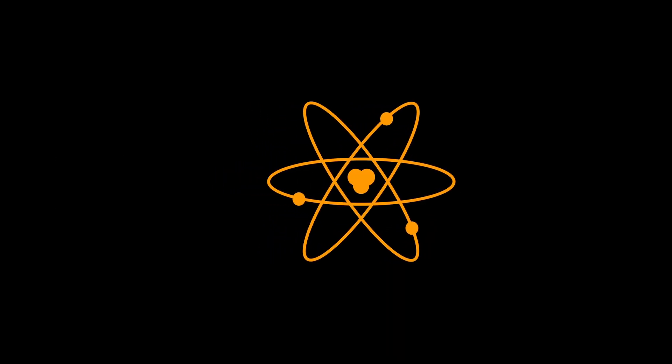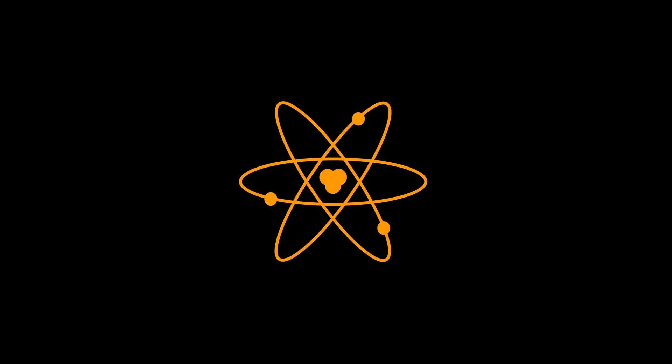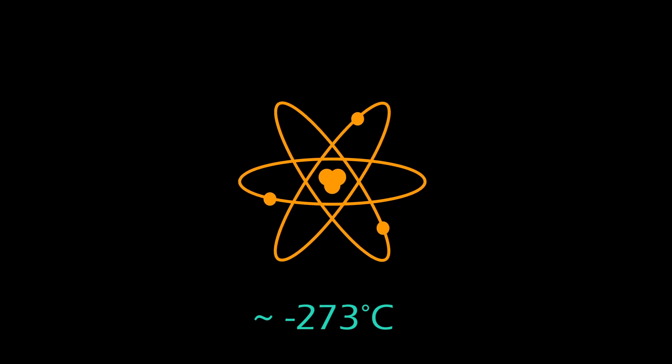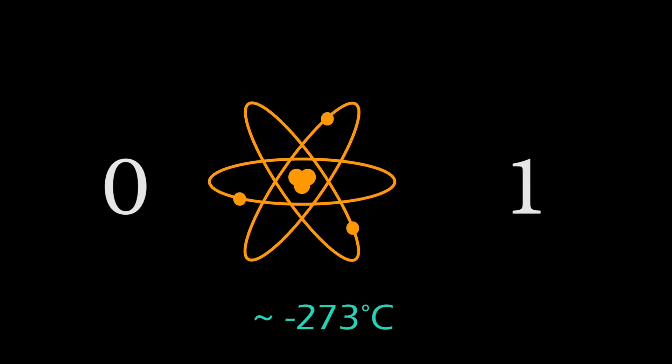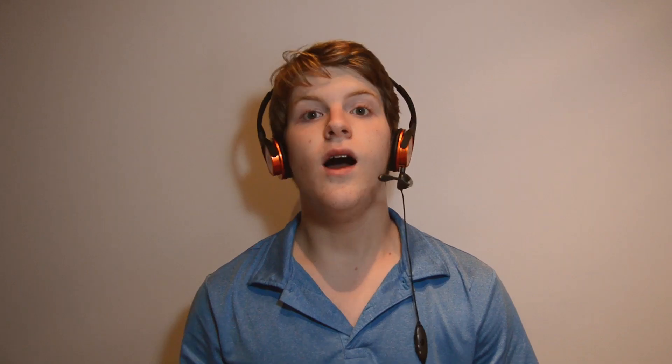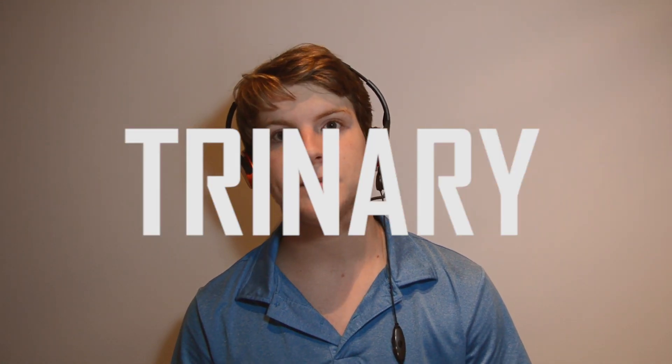Quantum computing uses single atoms as transistors. Quantum computers get fancy — at extremely low temperatures, atoms start to act strange, and instead of zeros and ones, atoms can represent zeros and ones at the same time. All of these types of computers are possible future additions or replacements to today's widespread binary world. However, the most practical and affordable version to add on today would be trinary, which works almost the same way as today's binary computers, just with three possible values instead of two.